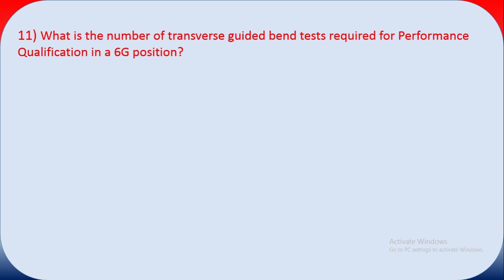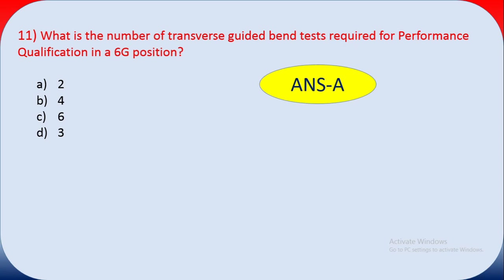Question eleven: what is the number of transverse guided bend tests required for performance qualification in the 6G position? Per ASME Section 9, options are A: 2, B: 4, C: 6, D: 3. The answer is A — 2 guided bend tests are required for performance qualification.